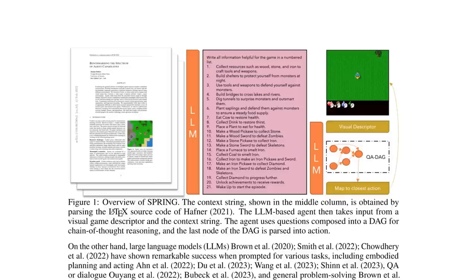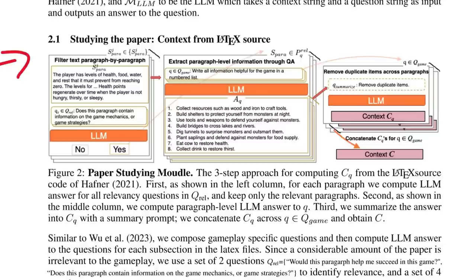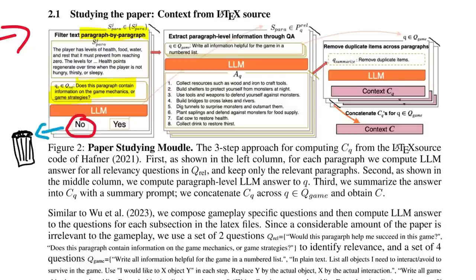To have an LLM learn to play this game, the authors have a very interesting strategy. They want it to learn to play just by using information it gathers from the original crafter specification paper. Accordingly, the first step of the author's method is to prompt the LLM to extract useful information from the paper. This happens in three steps. The first step entails going paragraph by paragraph and asking the LLM, does this paragraph contain information on the game mechanics or game strategies? If the LLM answers no, then the paragraph is discarded.